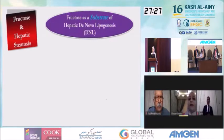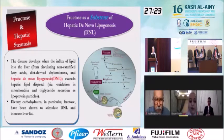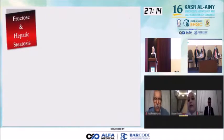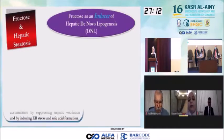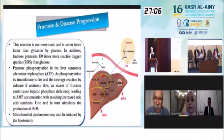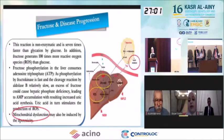Fructose doesn't only cause NAFLD — it also affects disease progression by many processes. First, it increases free radicals, leading to increased inflammation and fibrosis. Second, it increases phosphate depletion, giving us a large amount of adenosine monophosphate (AMP) which enters the synthesis of uric acid, which in turn increases inflammation. It also plays a role in mitochondrial dysfunction. Finally, it increases insulin resistance.